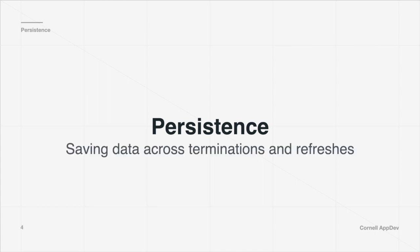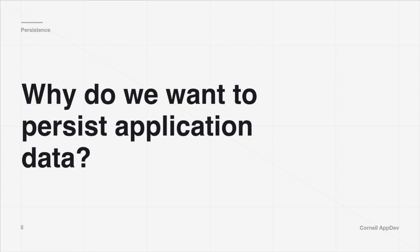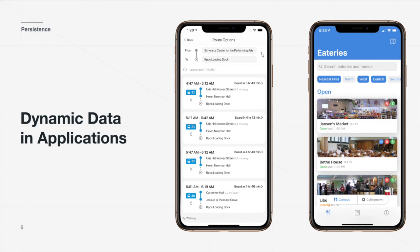On to the topic of persistence — simply put, persistence is basically being able to save application data to the disk so that even when a user terminates or refreshes your app, the data will still be stored and saved. A big part of any app is the dynamic data we render and display. For example, in Transit and Eatery, almost everything on the screen is data-driven. Some data, like bus routes and open eateries, is saved in databases retrieved through network calls, but other smaller pieces of data can be stored locally.